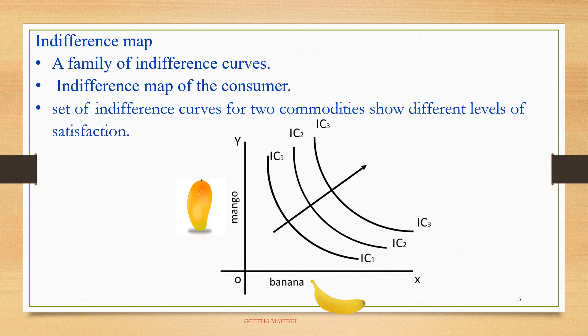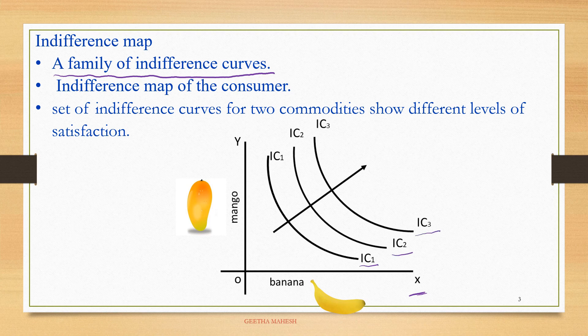Indifference map is a family of indifference curves. The consumer's preference over all the bundles can be represented by an indifference map as shown in the figure. This indifference map is also known as a collection of indifference curves. You can see it is a set of indifference curves for two commodities, showing different levels of satisfaction.